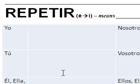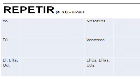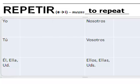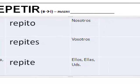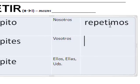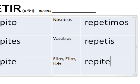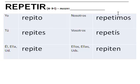Last one: repetir. This one is just a basic e to i stem change. Repetir means to repeat. I repeat: repito. You repeat: repites. Él, ella, usted repeats: repite. We repeat: repetimos. Vosotros in Spain: repetís. And ellos, ellas, ustedes — back to stem changing — repiten.